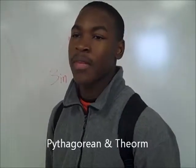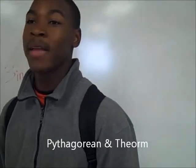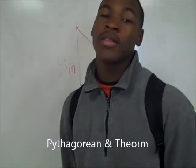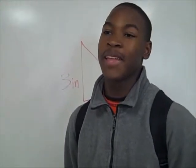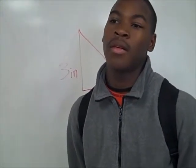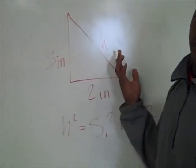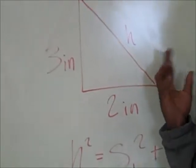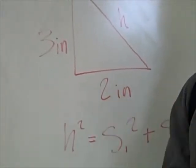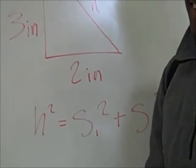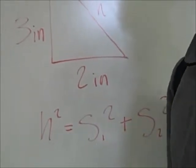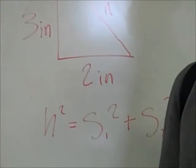Pythagorean theorem: the square of the hypotenuse of a right triangle is equal to the sum of the squares of the legs. For example, let H represent the hypotenuse. S represents one leg or side and S represents the other leg or side.